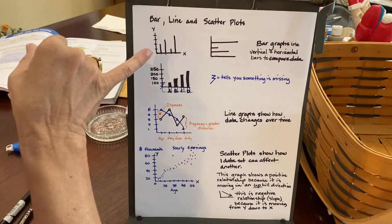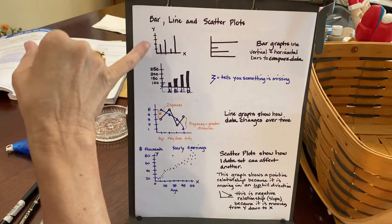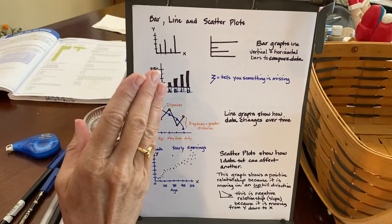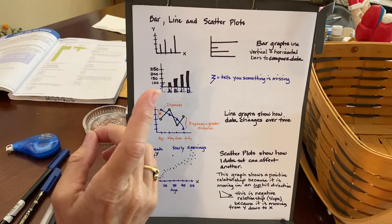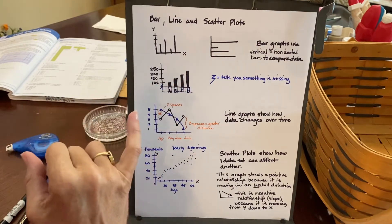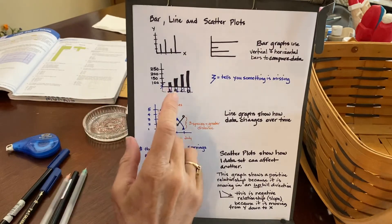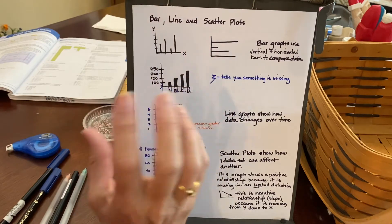Notice also that these bars are separated. None of them are touching each other, because later we'll talk about a histogram, and they are actually touching each other. So each of these are separate entities entirely.